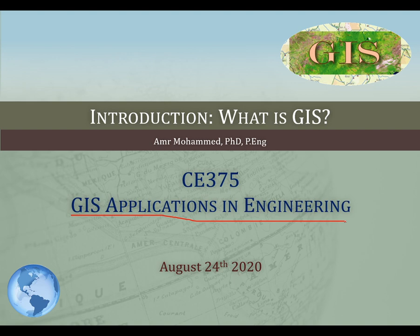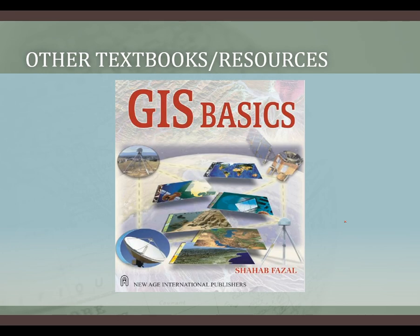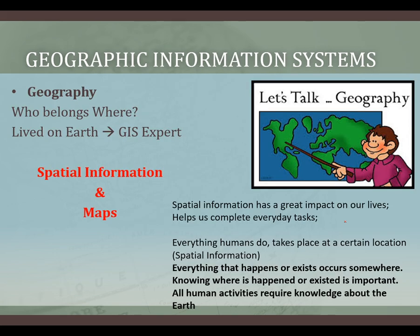GIS is a universal tool used in multiple disciplines. It started from geography, and we as engineers have claimed its use because its origins are very closely related to our work in civil engineering, specifically in surveying. The textbook I use is Introductory Geographic Information Systems by Jensen, though other introductory textbooks also work well for this class.